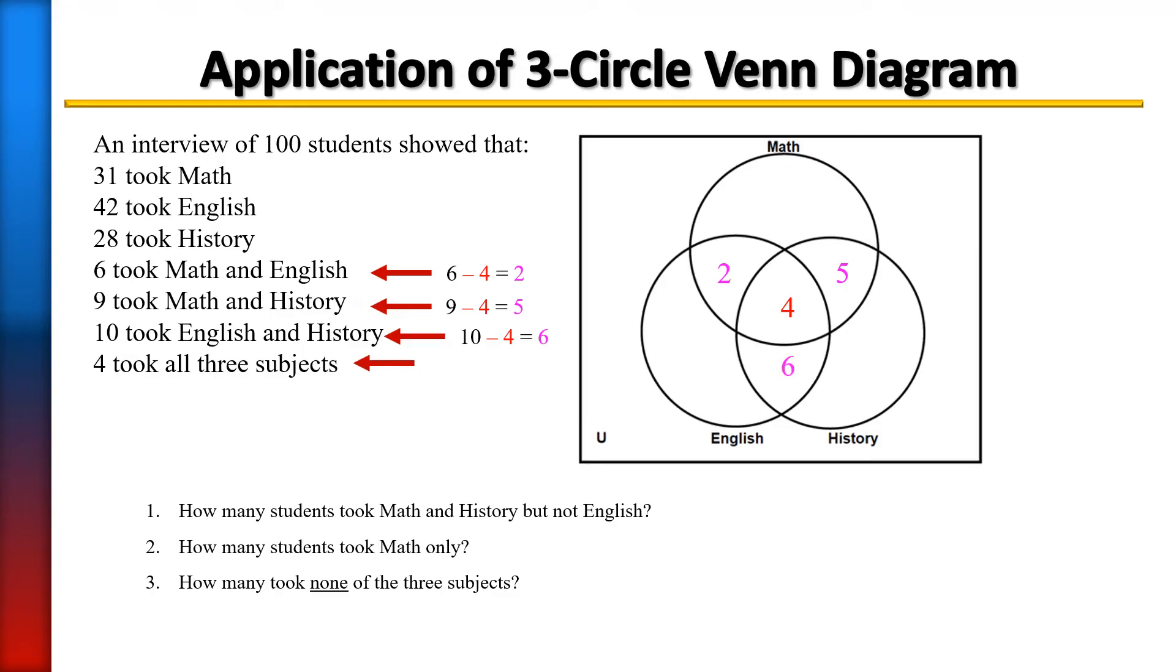Now that we've done the two-circle, we're going to do the only areas. We'll start with math. There were 31 students who took just math. Now there are already people inside the math circle, so we're going to have to find out how many that is and subtract it from 31. We have 2 plus 4, which is 6, and 6 plus 5 is 11. So there are 11 people already in the math circle. We have to subtract that 11 from the 31 and that gives us 20 only for math.